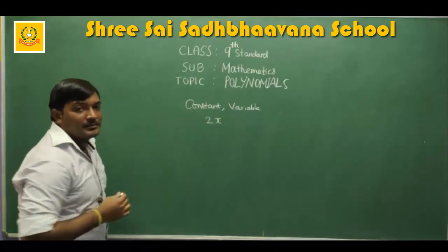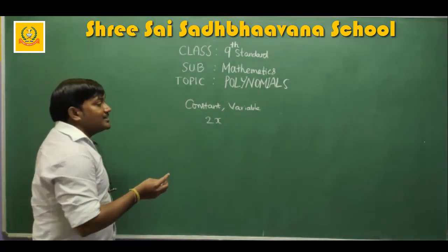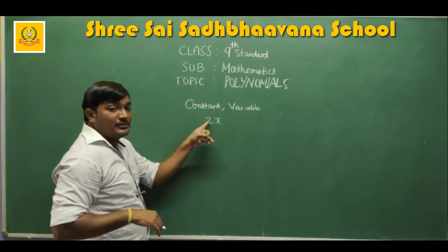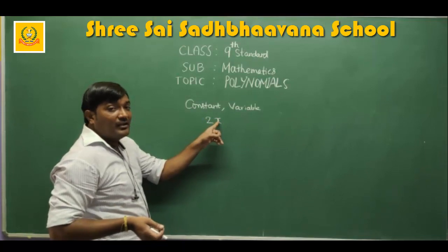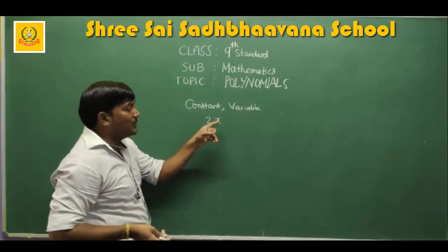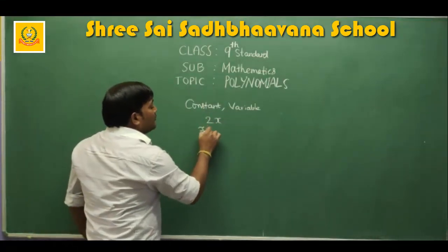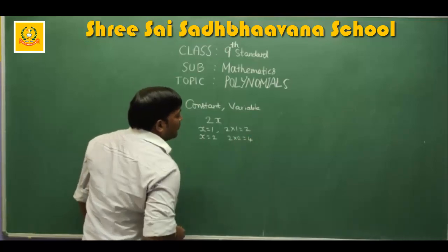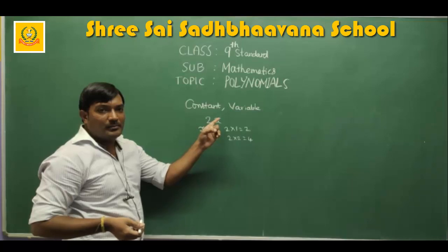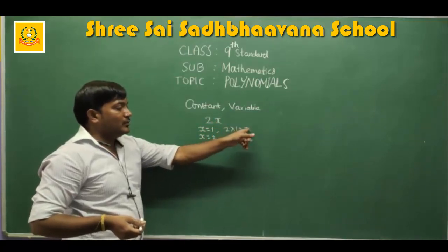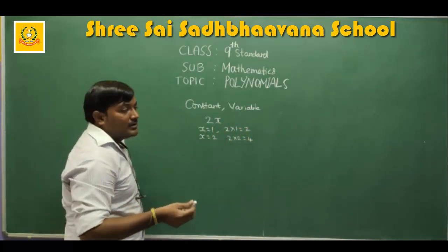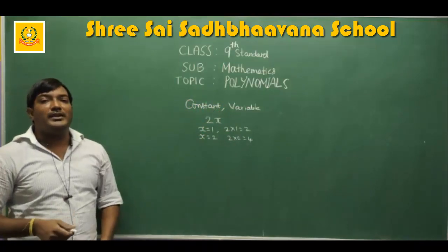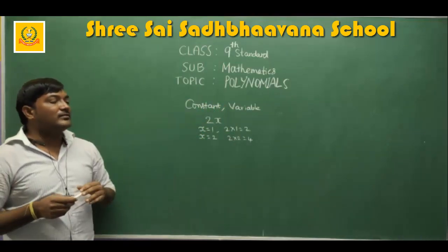For example, let me take 2x. In this, if you observe, 2 is a constant — or we can also call it the coefficient of x. The number or any alphabet which is multiplied to x is called the coefficient. It may be x or y or any other variable. x is called a variable because if you consider x as 1, you get 2×1 = 2; if x is 2, you get 2×2 = 4. You can take any real number for x, so the value of 2x changes. But you are not allowed to change the value of 2 — 2 will remain constant. That is why 2 is considered a constant and x is considered a variable.